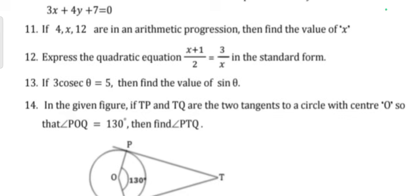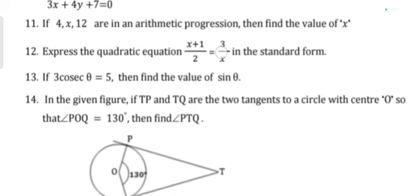Question 13: If 3 cosecant theta is equal to 5, then find the value of sine theta. Question 14: In the given figure, if TP and TQ are the two tangents to a circle with center O so that angle POQ is 130 degrees, then find angle PTQ.